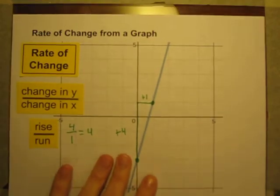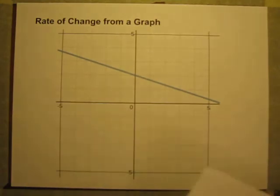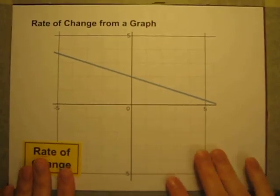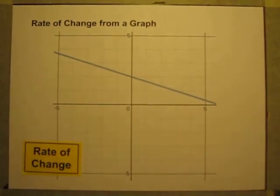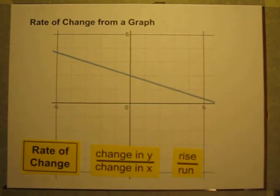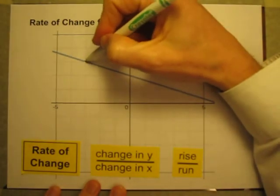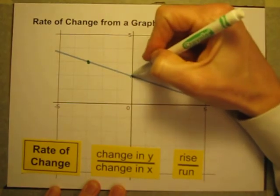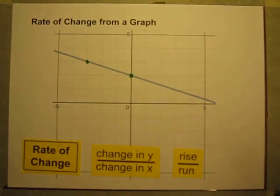One more example — I've got a line here on a graph, no story. I don't know what x represents, I don't know what y represents, but I can still get the rate of change. To get the rate of change for this line, I want to do the change in y divided by the change in x, which is also the rise divided by run. I'll pick two points on the line where I know the exact values, and get my rise — my change in y — divided by the run, the change in x.